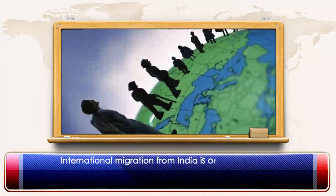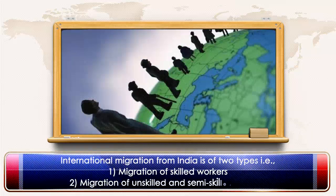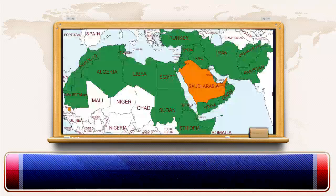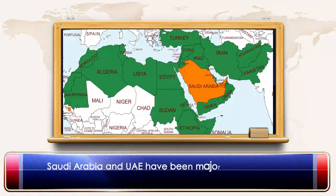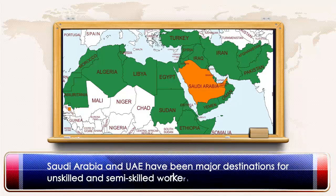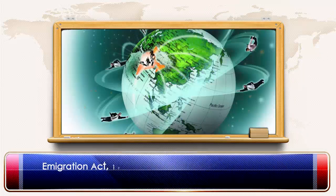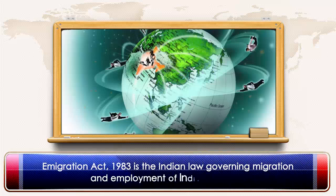International migration from India is of two types: migration of skilled workers, and migration of unskilled and semi-skilled workers. Saudi Arabia and UAE have been major destinations for unskilled and semi-skilled workers from the last few decades. Immigration Act 1983 is the Indian law governing migration and employment of Indians abroad.